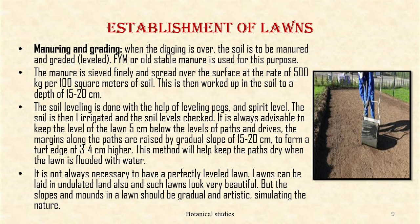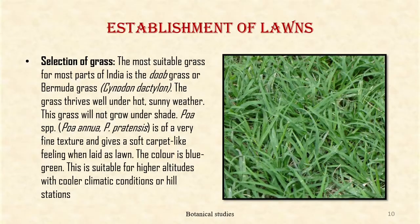The margin along the paths is raised by gradual slopes of 50 to 20 cm to form a turf edge of 3 to 5 cm higher. This method will help keep the path dry when the lawn is flooded with water. It is not always necessary to have a perfectly leveled lawn. Lawn can be laid in undulated land also, and such lawns look very beautiful, but the slopes and mounds in the lawn should be gradual and artistic, simulating nature.